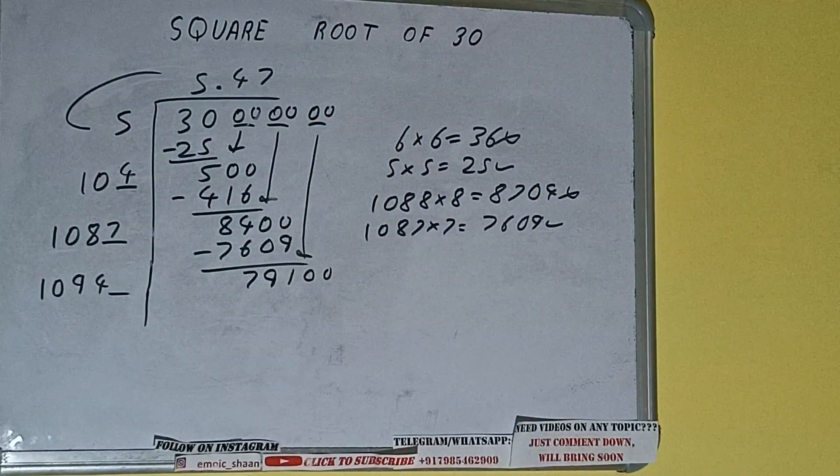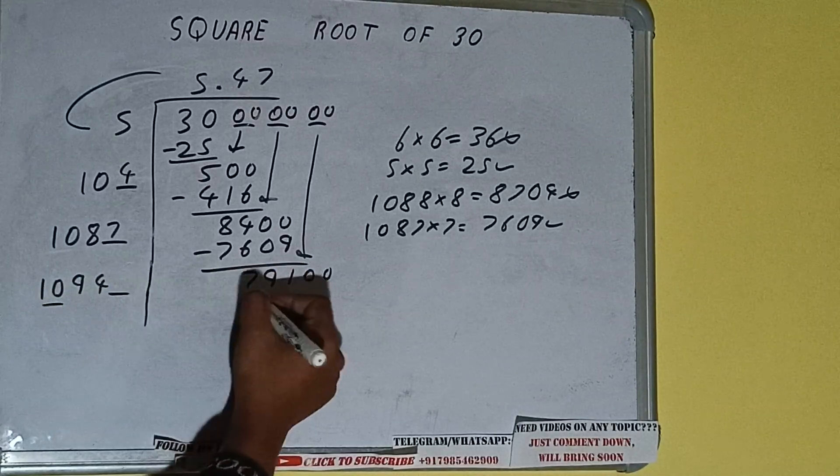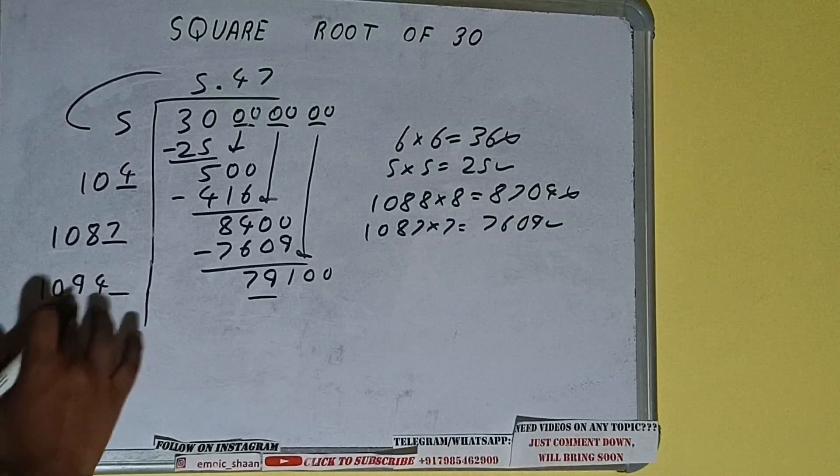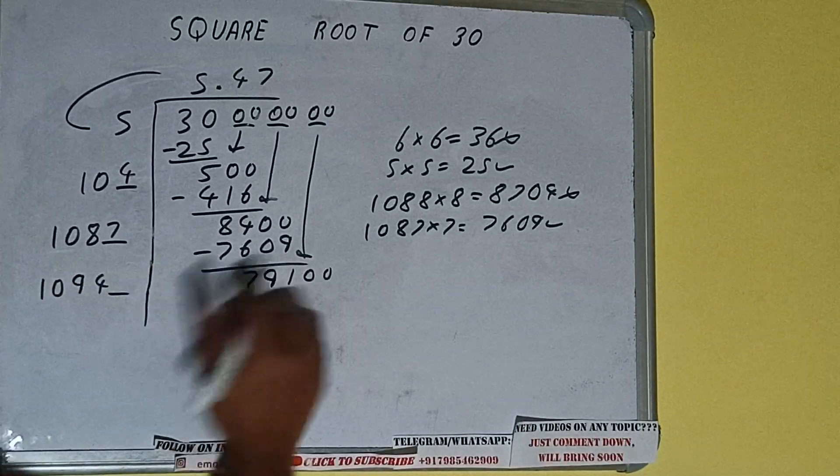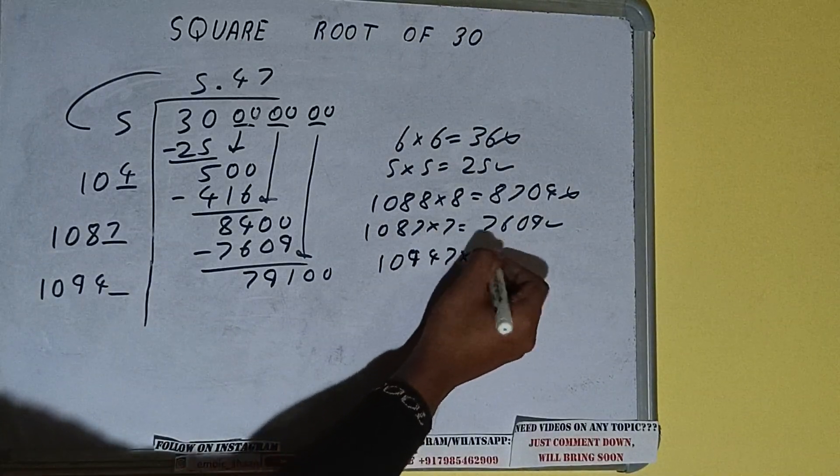Now compare 1094 with 79100. So 10 times 7 is 70, so we can try 7 times. 10947 into 7 we can try,